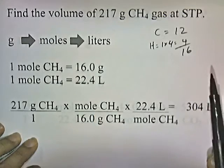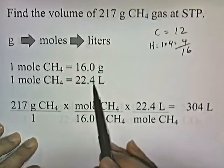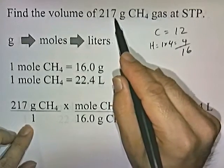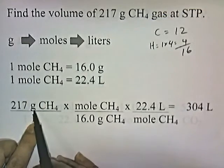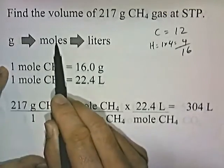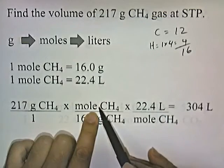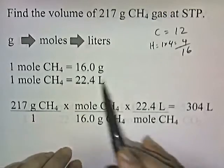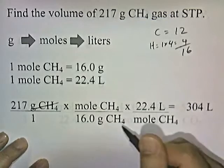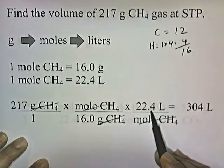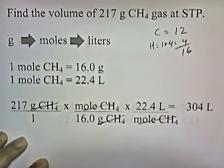To go from moles to liters, remember that at standard temperature and pressure, one mole of any gas has a volume of 22.4 liters. So: take 217 grams over 1, put 16 grams on the bottom and 1 mole of CH4 on top to convert grams to moles. Then put one mole of CH4 on the bottom and 22.4 liters on top. Grams of CH4 cancel, moles of CH4 cancel, and we're left with liters. 217 times 22.4 divided by 16 gives us 304 liters. So 217 grams of methane takes up 304 liters.